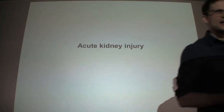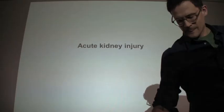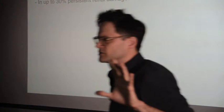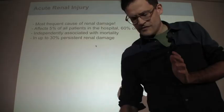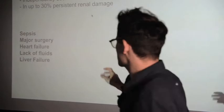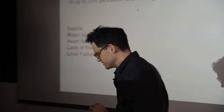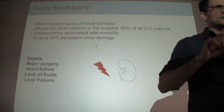This raises the question of how interstitial inflammation drives renal damage. To illustrate this, I would like to look at two renal diseases. The first is acute kidney injury. What is acute kidney injury? It's the most frequent form of renal injury — around 5% of all hospital patients will have it, and in the ICU, 60% will have acute renal damage. It's independently associated with mortality, and depending on the cohort, up to 30% of these patients will have persistent renal damage. In this case, the primary target compartment is not the glomerular system — this directly hits the tubular system and causes acute tubular injury.